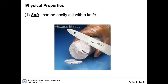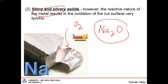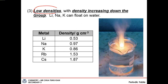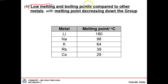Some physical properties of alkali metals: they are soft and can be cut with a knife. They are shiny and silvery, but because they are very reactive, once cut they react with oxygen in air to form oxide like Na2O, causing the surface to lose its shine. They have low densities, but density increases down the group. The first three elements — lithium, sodium, potassium — have density less than water (1 g/cm³), so they float on water. Their melting and boiling points are much lower compared to other metals, and the melting point decreases down the group.